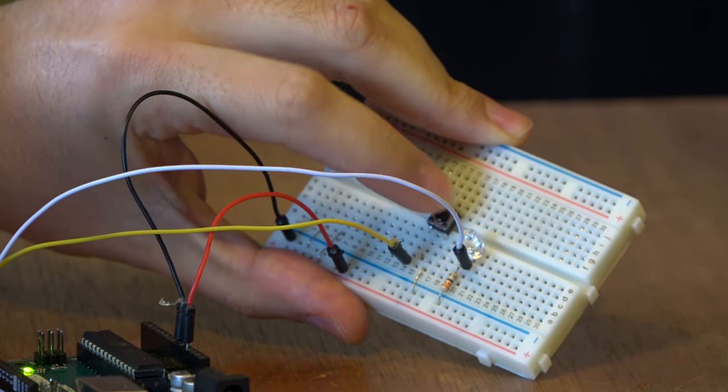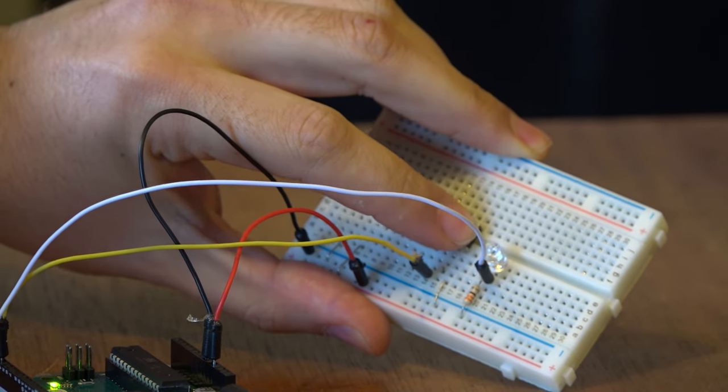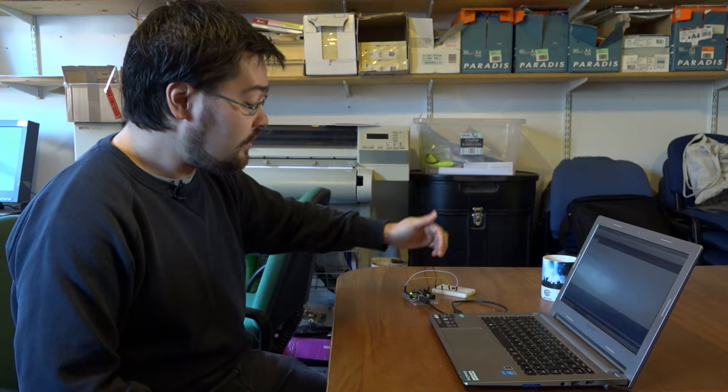If I press it relatively slowly, it toggles. But if I press it fast, it's unreliable. It's only going to pick it up if it happens to be executing this if switch is pressed line when someone happens to press the switch.